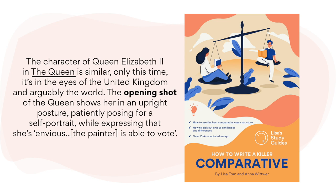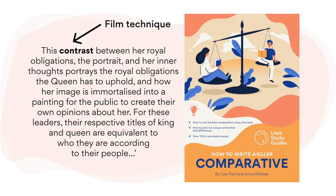The character of Queen Elizabeth II in The Queen is similar, only this time in the eyes of the United Kingdom and arguably the world. The opening shot of the film shows her in an upright posture, patiently posing for a self-portrait while expressing that she's envious the painter is able to vote. This contrast between her royal obligations — the portrait — and her inner thoughts portrays the obligations the Queen has to uphold, and how her image is immortalized in the painting for the public to form their own opinions of her. For these leaders, their respective titles of King and Queen are equivalent to who they are according to their people. I hope this example is helpful in understanding how you can use film techniques and literary devices together in an essay.